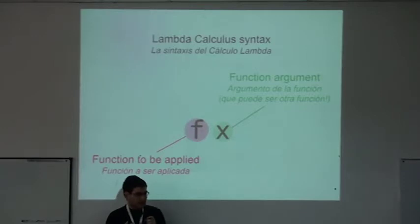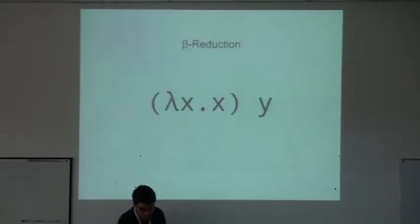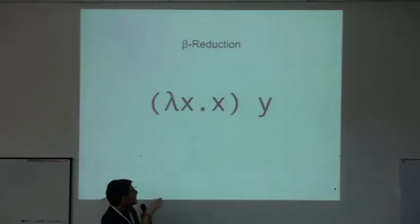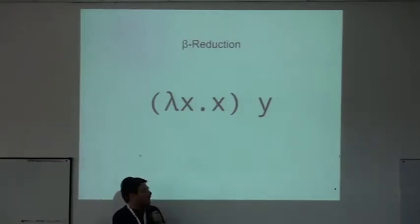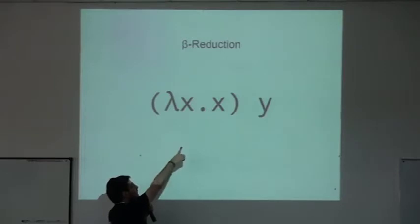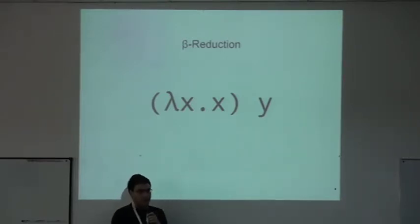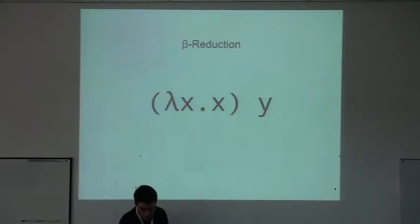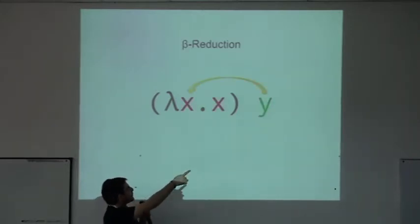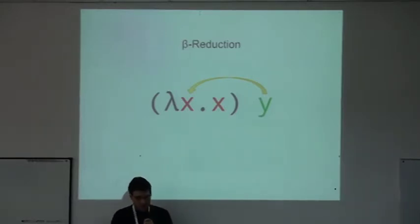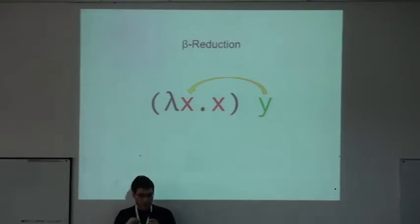The main mechanism that Lambda Calculus has to evaluate a function is called beta reduction. Here's a little example: we have a definition of a function, and then we evaluate it passing y as an argument. We bind the y argument to the x parameter and then replace all occurrences of x in the body of the function with y.